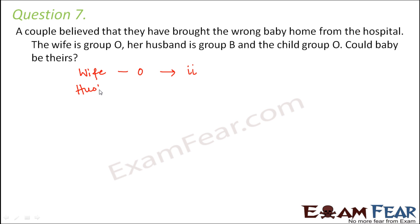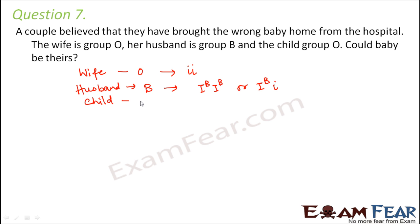The blood group for the husband is given as B. So what are the possible genotypes for this? It can be I^B I^B (homozygous) or it can be I^B i (heterozygous). These are the two possible genotypes. And the child's blood group is also O, therefore the genotype for the child would again be I^i I^i. So we have to find out if a cross happens between this wife and this husband, is it possible to have a child with blood group O.